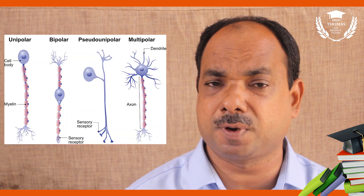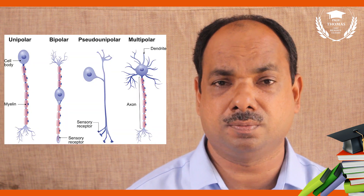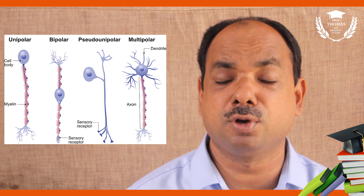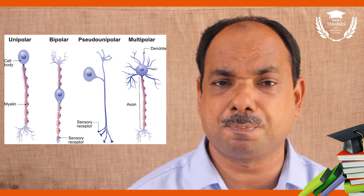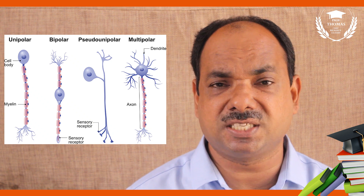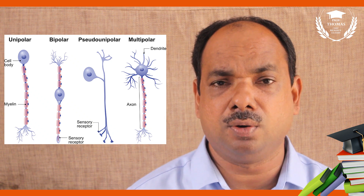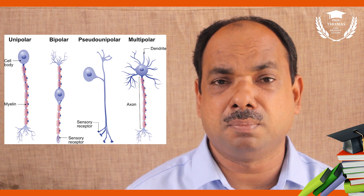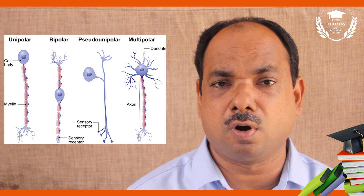The conduction of nerve impulses is unidirectional. Sometimes collateral structures arise from the axon. Unipolar neurons are present in the embryo, bipolar neurons are present in the retina, and multipolar neurons are present in the cerebral cortex.